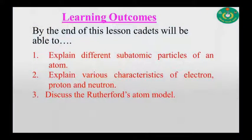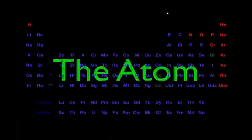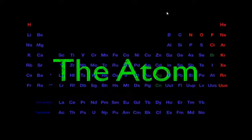By the end of this lesson, cadets will be able to explain different subatomic particles of an atom. Second, explain various characteristics of electron, proton and neutron. And thirdly, discuss the Rutherford's atom model. I will continue my lesson to talk about the subatomic particles of an atom and lastly the Rutherford's atomic model.